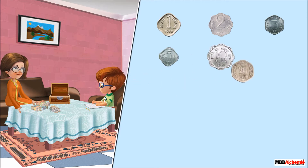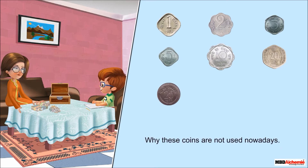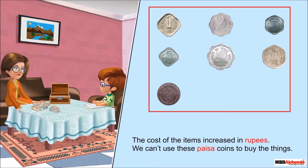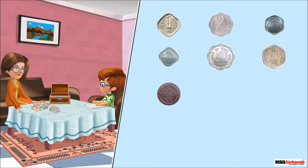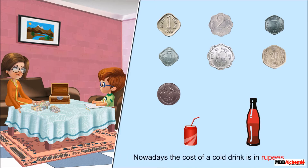She shows him the coins: one paise, two paise, three paise, five paise, ten paise, twenty paise, and twenty-five paise. Neil asks why these coins are not used nowadays. His mother tells him that the cost of items increased into rupees, so we can't use these paise coins to buy things. For example, earlier you could buy a cold drink with a ten paise coin, but nowadays the cost of a cold drink is in rupees.